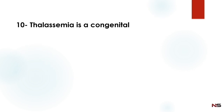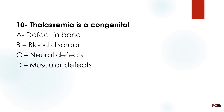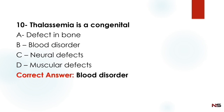Next question: Thalassemia is a congenital — Option A: inborn defect. Option B: blood disorder. Option C: neural defect. Option D: muscular defect. The correct answer is Option B — blood disorder. Thalassemia is a congenital blood disorder.